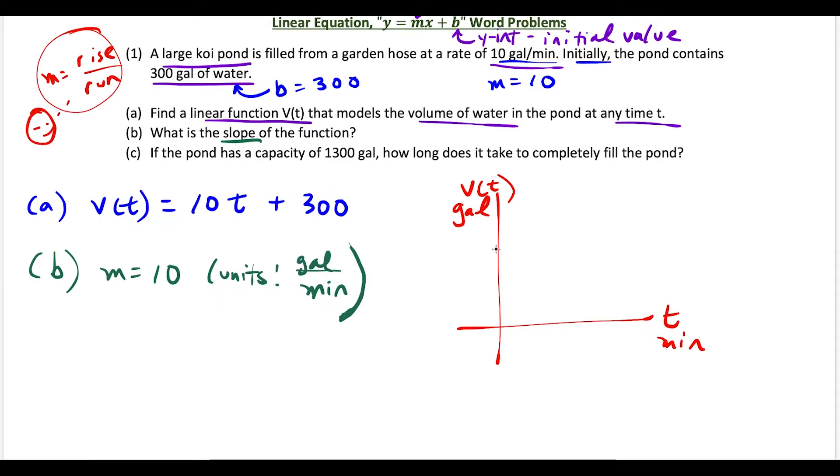Now if we sketch the line 10t + 300, we have a y-intercept of 300 and a slope of 10. So this line is going up. What we're looking for is when does the pond reach a capacity of 1300 gallons, which is at this time along the horizontal axis. I'm pointing this out because students sometimes get mixed up as to which term they're plugging in for. 1300 gallons refers to replacing V(t) in our equation from part a.